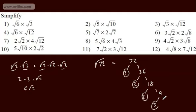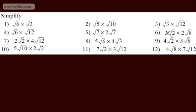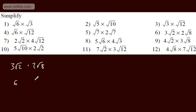OK, let's look at 3 root 2 multiplied by 2 root 8. The idea is to multiply the front two numbers and then deal with the surds. One choice is: do 3 times 2 which gives 6, then root 2 times root 8 which gives root 16. The root of 16 is 4, and 6 times 4 gives 24. An alternative approach is to spot that root 8 is 2 root 2, so instead we write 3 root 2 times 4 root 2: 3 times 4 is 12, root 2 times root 2 is 2, giving 24.